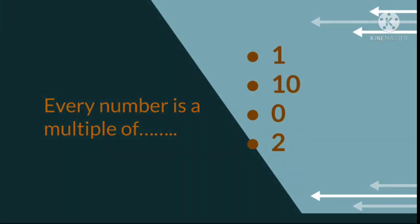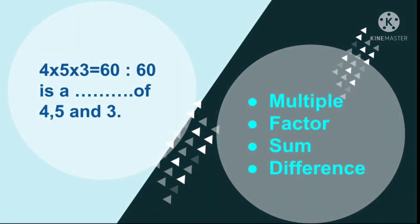Question number 5: Every number is a multiple of dash. Your options are 1, 10, 0, or 2. So choose the correct option. Question number 6: 4 multiply 5 multiply 3 is equal to 60. 60 is a dash of 4, 5, and 3. If 60 is the product of 4, 5, and 3, then you have to tell that 60 is the dash of 4, 5, and 3. Your options are multiple, factor, sum, or difference. So choose the correct one.